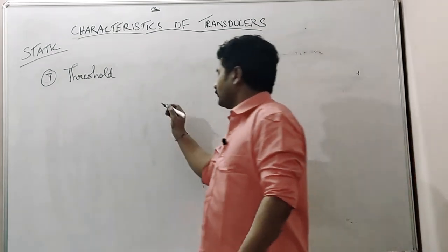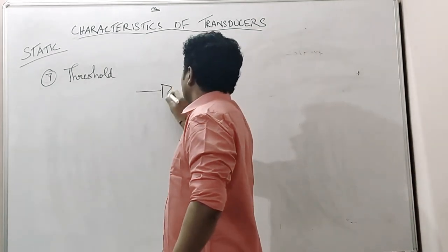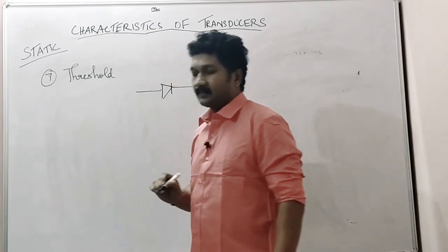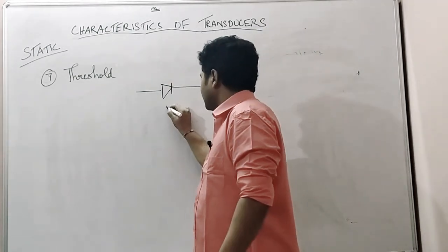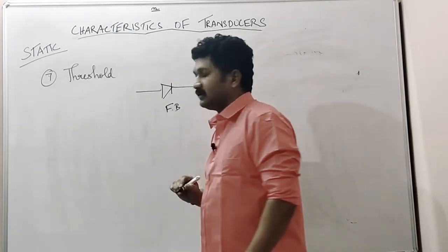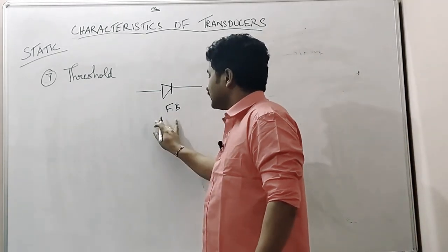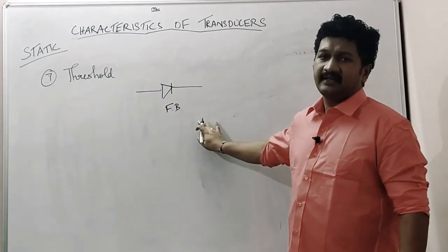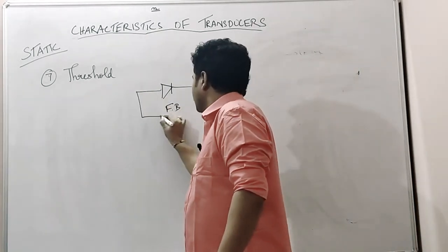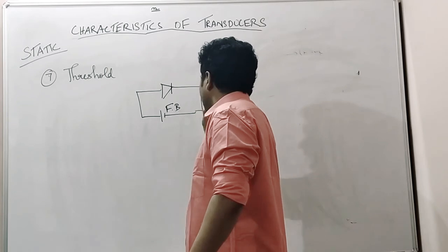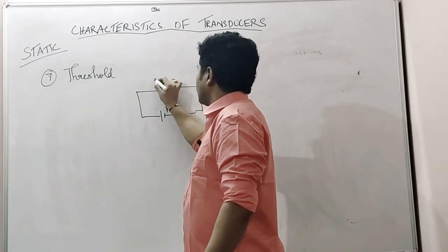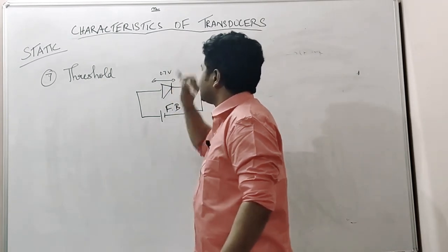For example, a PN junction diode works in the forward bias region. What is the forward bias? In forward bias, what is the objective to be fulfilled? Each and every diode has a barrier potential of 0.7 volts.